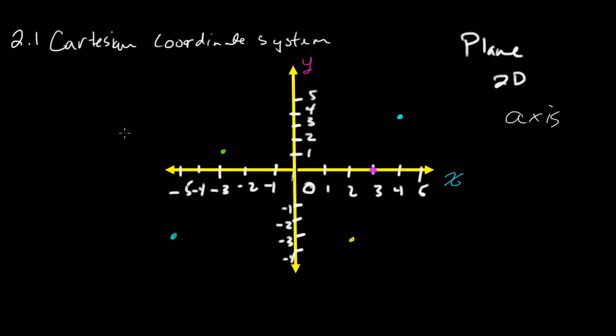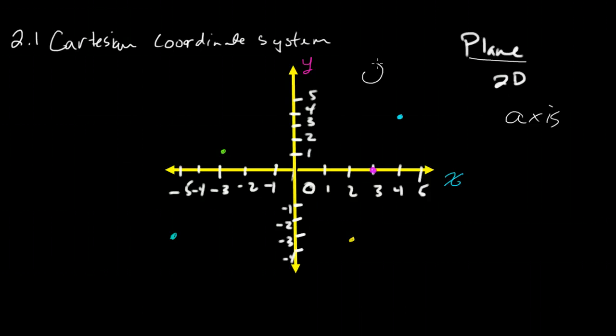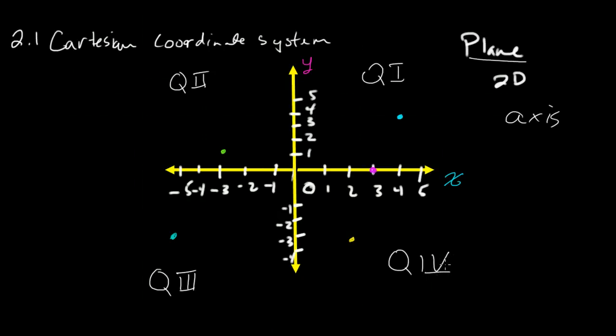Before we name that, let's take a quick look at the different parts of the coordinate plane. Once I've created my plane, it is automatically divided up into these quadrants: quadrant 1, quadrant 2, this here is quadrant 3, and down here is quadrant 4.